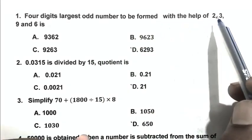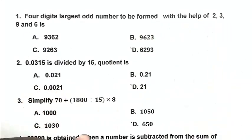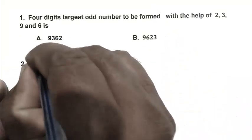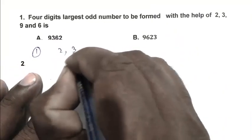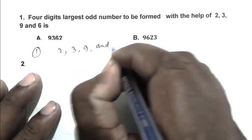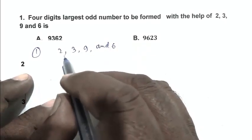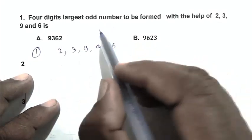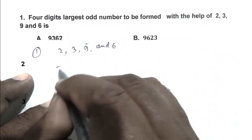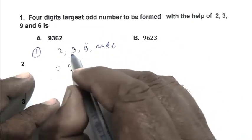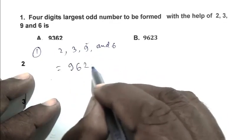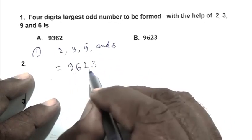Question number one: form the four-digit largest odd number with the help of 2, 3, 9, and 6. To form the largest number, write the largest digit first, so nine, then six. We have to form an odd number so we write three at the last, making it 9623. B is the right answer.